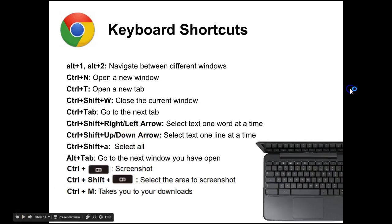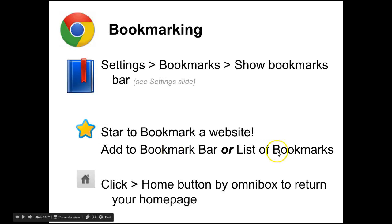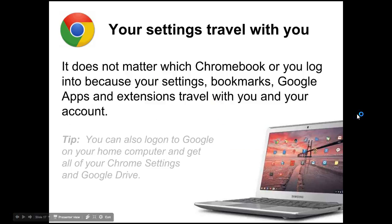Bookmarking works very similar to how you bookmark websites in the Chrome browser. Go to Settings > Bookmarks > Show Bookmarks Bar to show your bar across the top, then click the star on the address bar to favorite a website and add it to your bookmark bar or a bookmarks list. You can click the home button beside the search box to return to your home page at any time. You can also use the screenshot key at the top of the keyboard to take screenshots of the entire screen or a specific area.